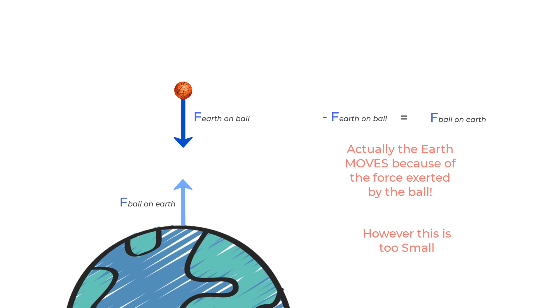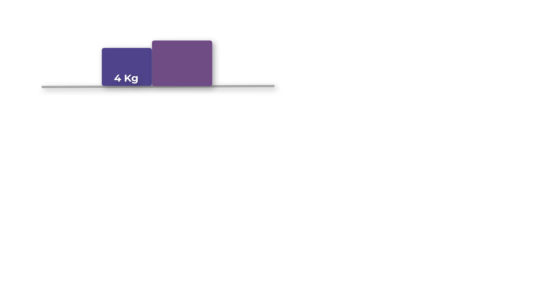Now let us work on a situation you will very often encounter when solving numerical problems, so it is very important to understand this part. We have two boxes lying on top of a table — one is 4 kilograms and the other is 6 kilograms. We exert a force of 10 newtons on the 4 kilogram mass, and we are asked to find the acceleration of each box or the acceleration of the system.